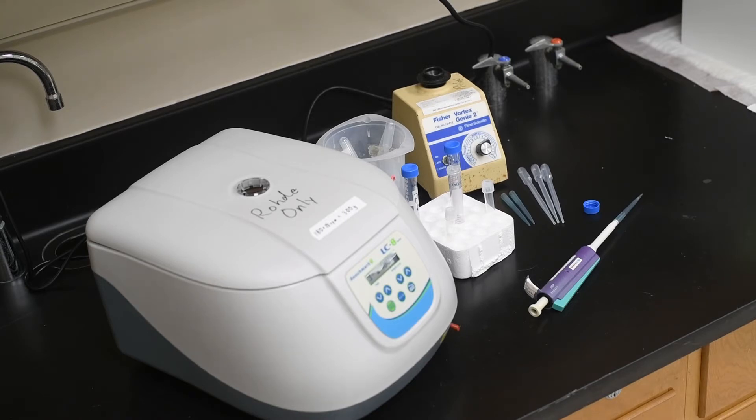Place them in a centrifuge for 5 minutes and spin them into a pellet. Since I had two tubes of equal volume, the centrifuge was balanced.